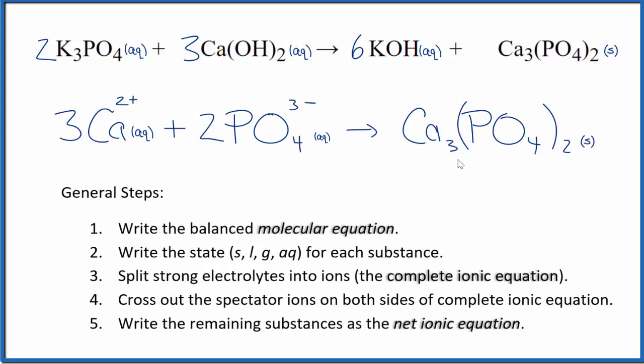So this is the balanced net ionic equation for K3PO4 plus Ca(OH)2. You note, charge is conserved. 3 times 2 plus, that's 6 plus. 2 times 3 minus, 6 minus. That all adds up to zero here, net charge of zero. Calcium phosphate neutral compound, net charge of zero. Charge is conserved, and if you count the atoms up, they're balanced as well.